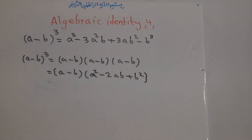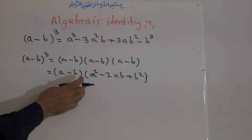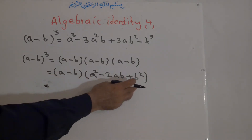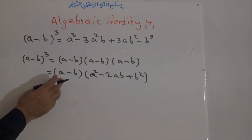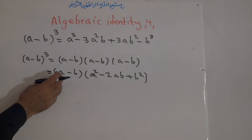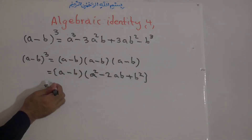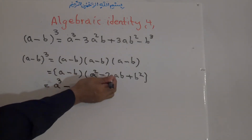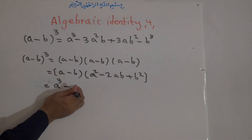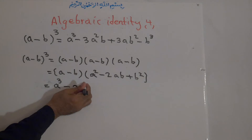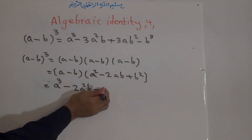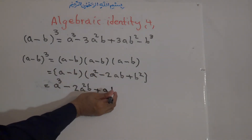You can go to Algebraic Identity number 2 to find out that result. Now we multiply the binomial by this trinomial. The first term: a times a squared equals a cubed. Then positive times negative: a times 2ab equals 2a squared b. Positive times positive: a times b squared equals ab squared.